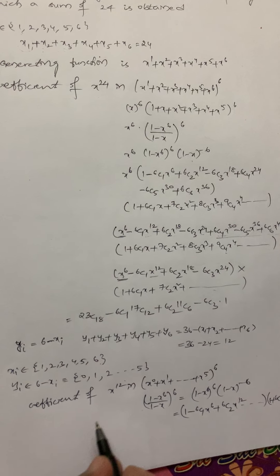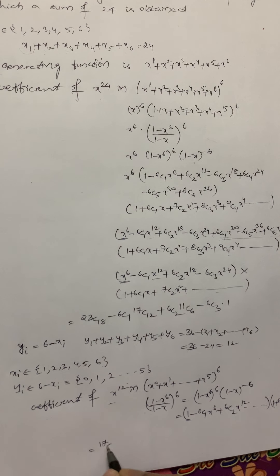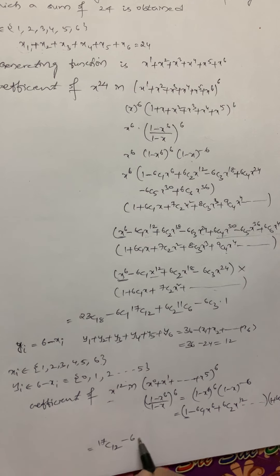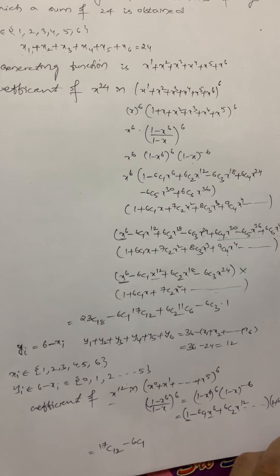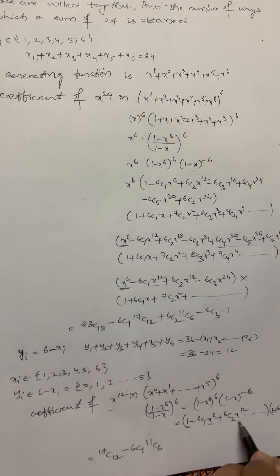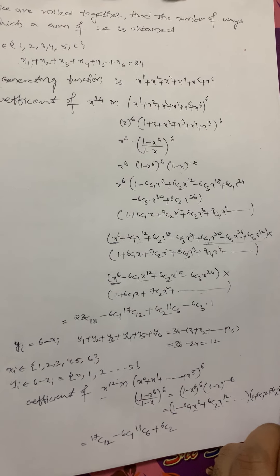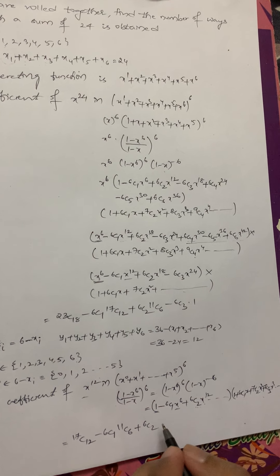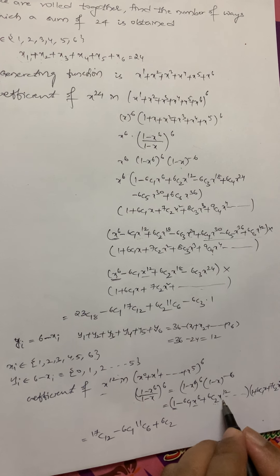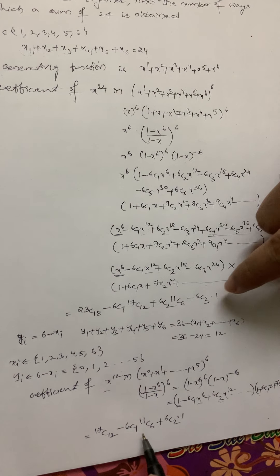We want only the coefficient of x^12. From the term '1': x^12 gives 17C12. From −6C1·x^6: we need x^6, which gives 11C6. From 6C2·x^12: we need x^0, which gives 1. So the coefficient of x^12 is 17C12 − 6C1·11C6 + 6C2·1. This and the previous result are mathematically the same.